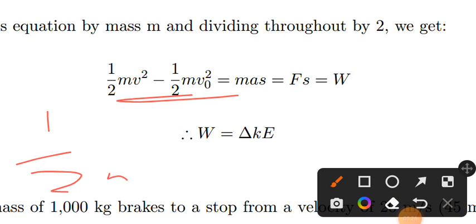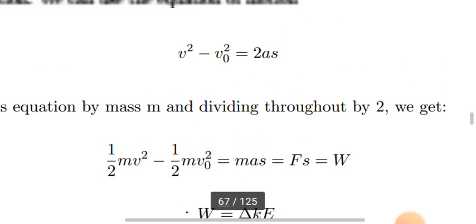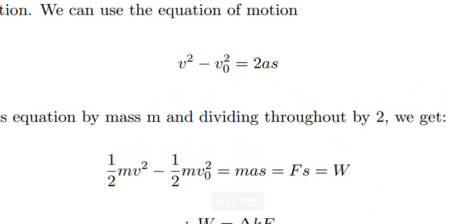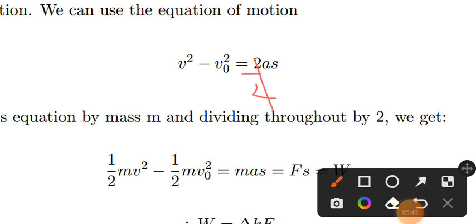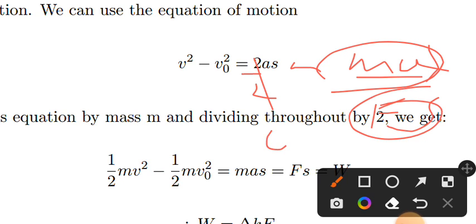The kinetic energy is defined as half of mv squared. So the formula gives us: it is equal to m times a times s. That is mass times acceleration, which equals force times displacement. So work equals force times displacement.